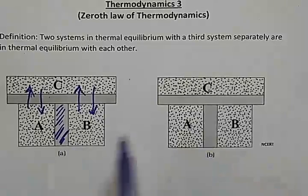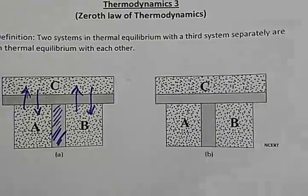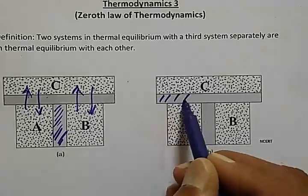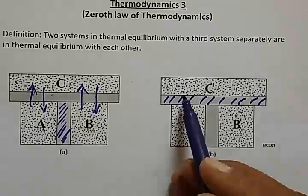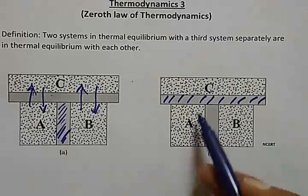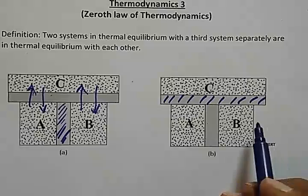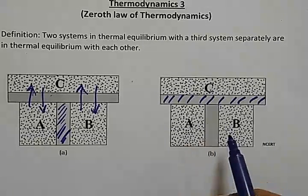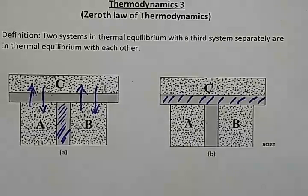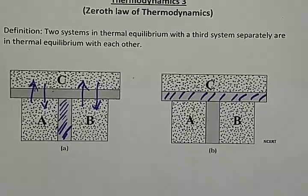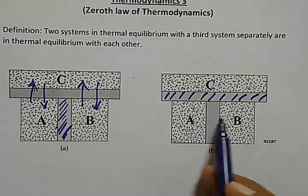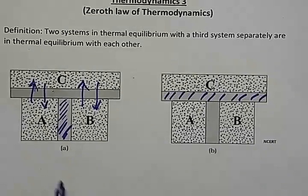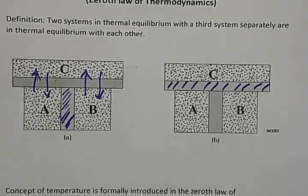Now we place an adiabatic wall between A and B, and a connecting wall between A and B replaces the contact with C. No energy can flow from A to C or C to A, or between B and C. When we make the observation, there is no flow of energy or heat happening between A and B.